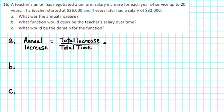A teacher's union has negotiated a uniform salary increase for each year of service up to 20 years. If a teacher started at $26,000 and four years later had a salary of $32,000, what was the annual increase?